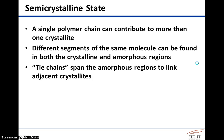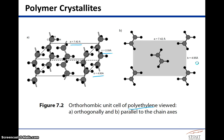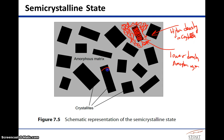A single polymer chain can contribute to more than one crystallite. Going back to the reentry idea, a polymer chain can wind in here, become amorphous for a while, wind back in over here, and repeat. This is certainly possible.